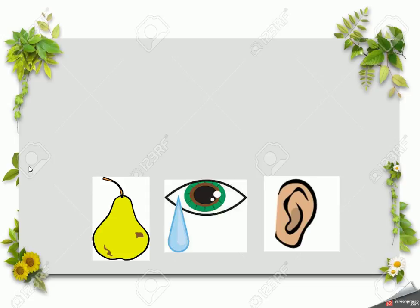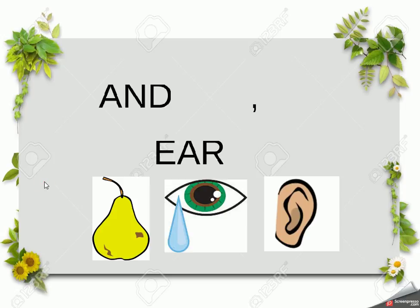So we've looked at 'and' and commas. 'And' is where we connect two sentences together or use it at the end of a list. A comma is a pause, or used in lists to separate the first items. We also looked at the letters E-A-R, which can be pronounced as 'air', 'ear', or 'year'.